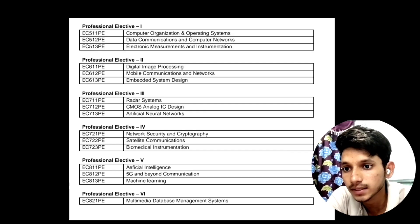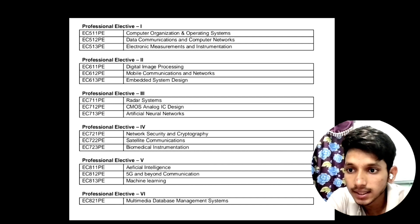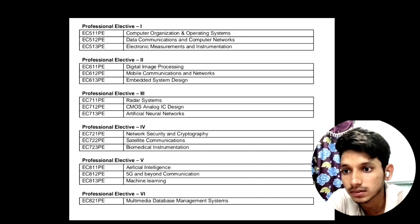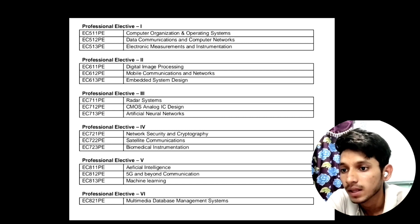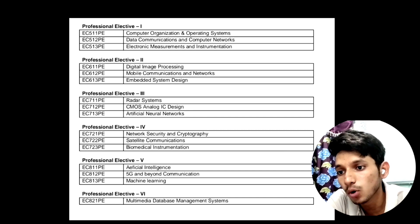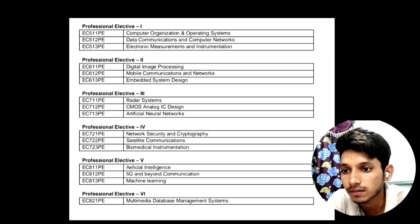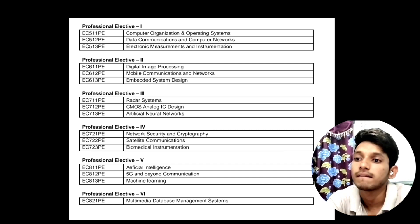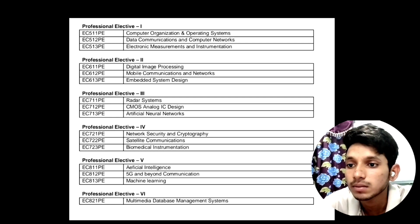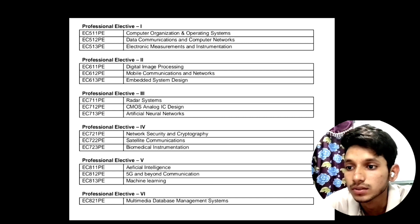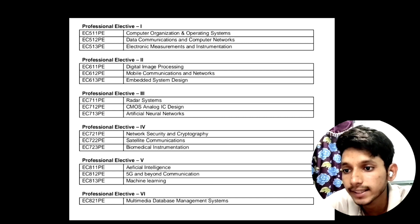Now let's see the electives. In Professional Elective One the subjects will be: Computer Organization and Operating Systems, Data Communications and Computer Networks, and Electronic Measurements and Instrumentation. In Professional Elective Two the subjects will be: Digital Image Processing, Mobile Communications and Networks, and Embedded System Design.